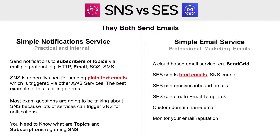In Exam Pro, any time someone signs up, it sends me an SNS email. In that context, I go into SNS and create a topic called 'Exam Pro Signups.' Then I subscribe to that topic — I put in my email and it sends me a confirmation email, so I'm subscribed. Then using the AWS SDK, whenever someone signs up, I trigger that SNS topic and it sends to all the subscribers.